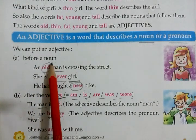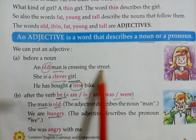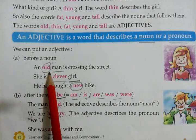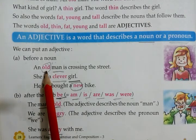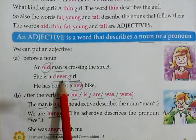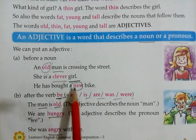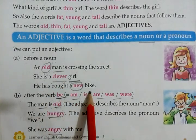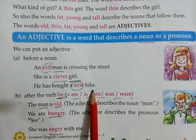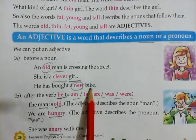Let's see through examples. Adjectives can be placed before a noun. For example: 'An old man is crossing the street.' Man is noun. Old is adjective used before the noun. 'She is a clever girl.' Girl is noun, clever is adjective. 'He had bought a new bike.' New is adjective — kaisi bike khari thi? New. These adjectives are used before the noun.